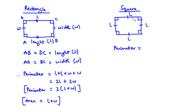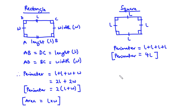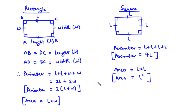The perimeter of a square equals L plus L plus L plus L, which gives us 4L. That is the perimeter of a square. For the area, we have length times length, which is L squared. So these are the formulas for the perimeter and area of a rectangle and a square.